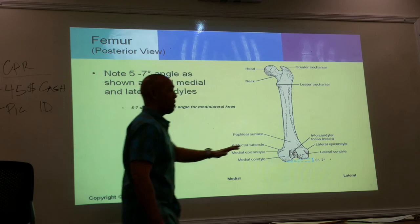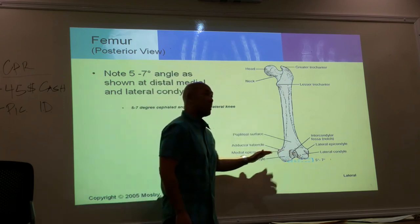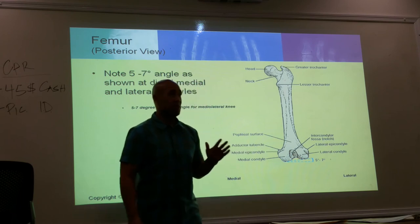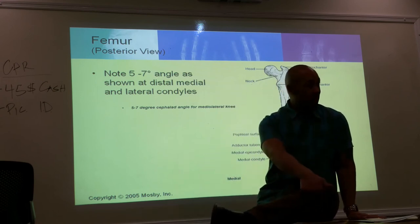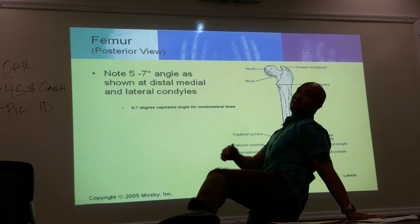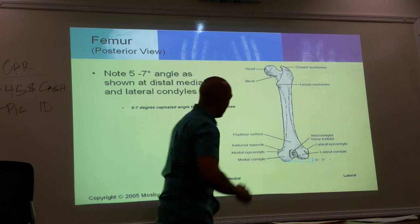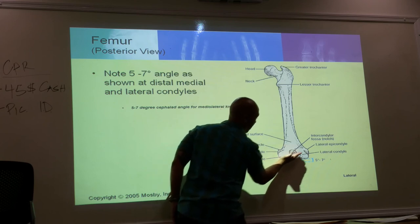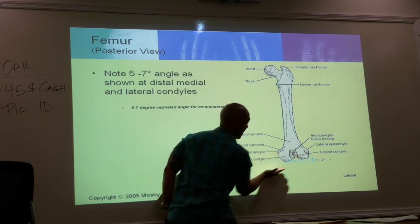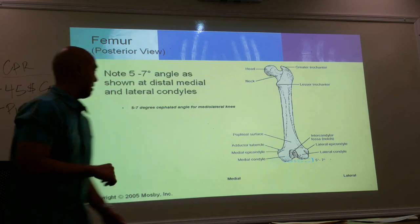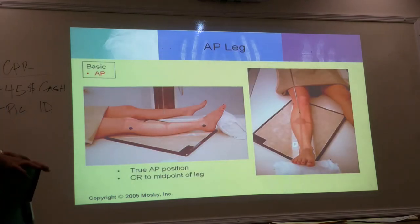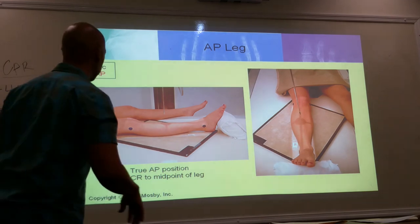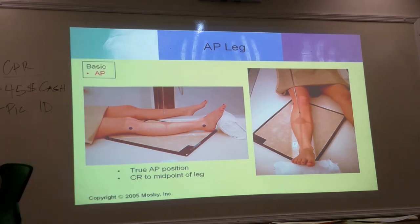The femur is the longest and strongest bone. The patella is one and a half inches above the joint, so when taking knee x-rays, we feel for the patella and go about half an inch below it — that will take you right to the center of the knee joint. The bony landmarks to feel are the condyles, epicondyles, and the patella. Now let's discuss the projections of the lower leg.